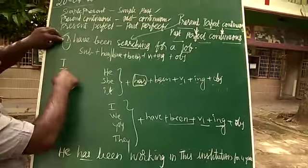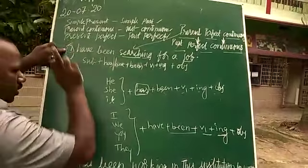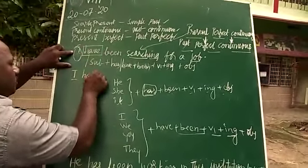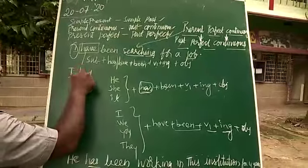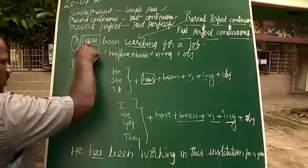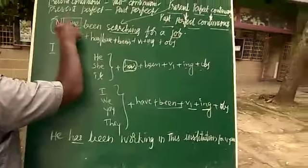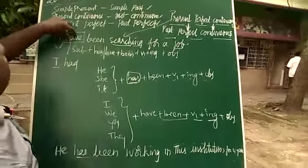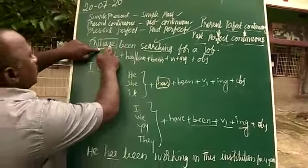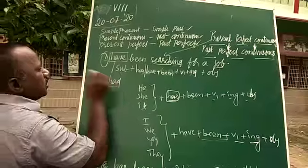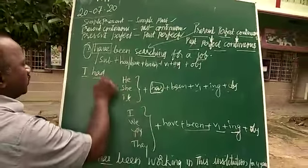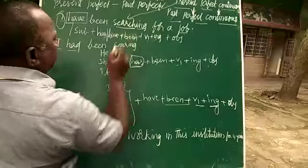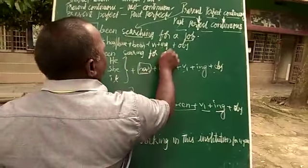Present perfect continuous to past perfect continuous — only one word will change. That is, 'have' will change into 'had'. Even though you have 'has' in present perfect continuous, you still take 'had'. For example: 'I have been searching for a job' — have changes to had, so it becomes 'I had been searching for a job.'